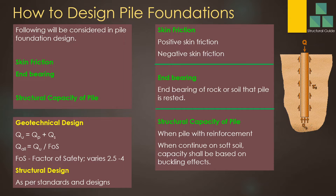How do we design pile foundations? The main factors to consider are skin friction, end bearing, and structural capacity. Skin friction and end bearing together form the geotechnical capacity of the pile, while structural capacity comes from the reinforcement.